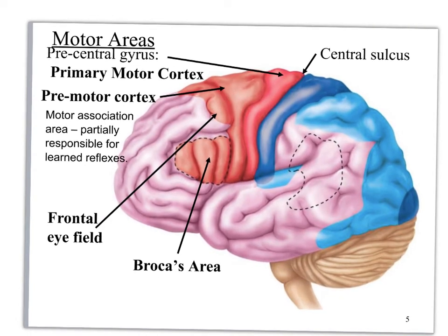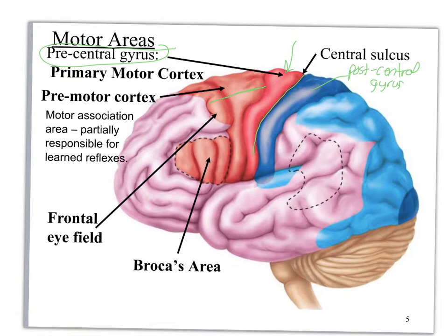Again we've got our central sulcus, and this is our post-central gyrus where you found your somatosensory cortex. Now we're going to focus on the pre-central gyrus, which is shown in dark bright red, and this is where our primary motor cortex is going to be located. And then this part is called the premotor cortex. This is also an association area, and you're going to be doing some learned reflexes and stuff like that in there.